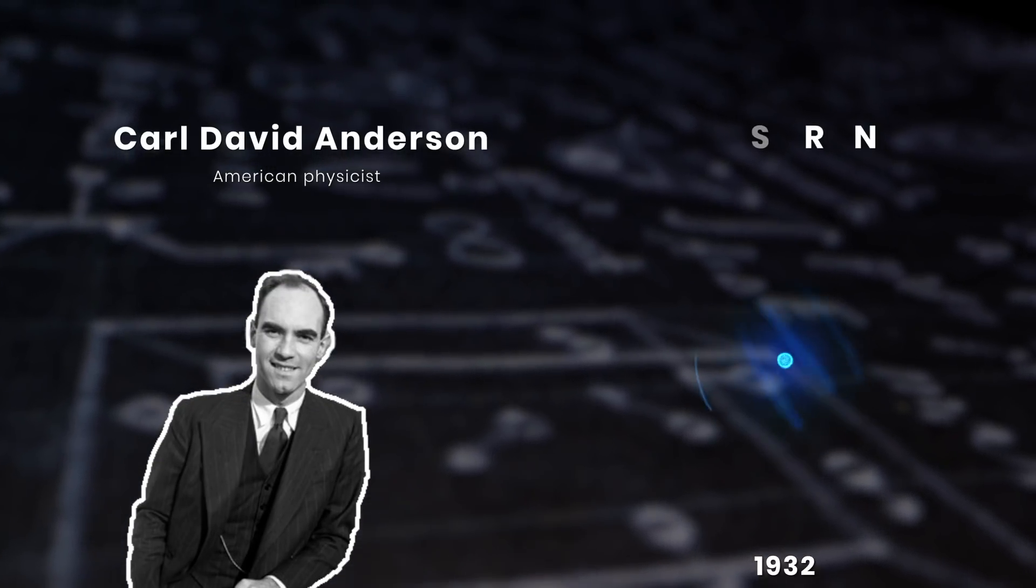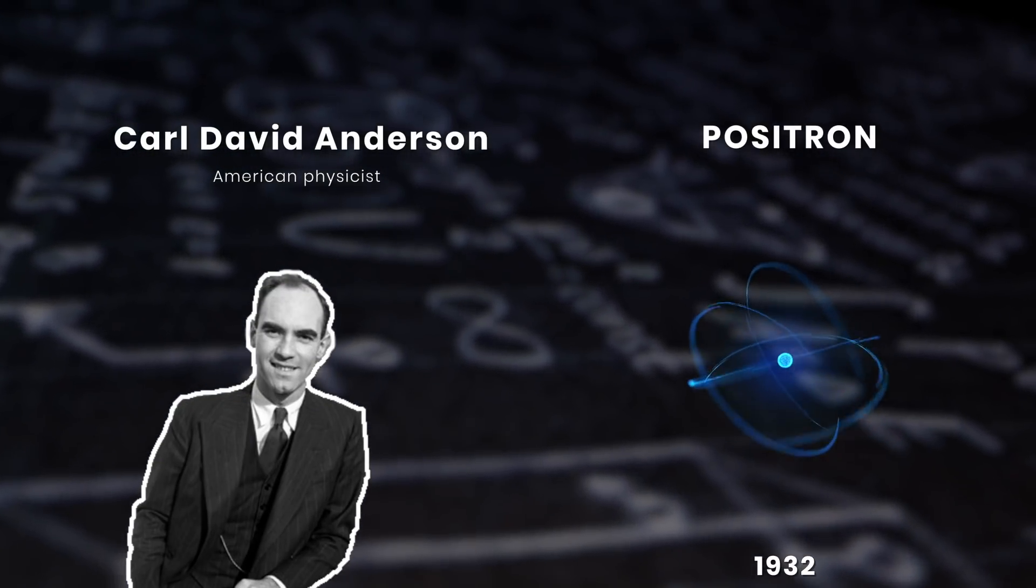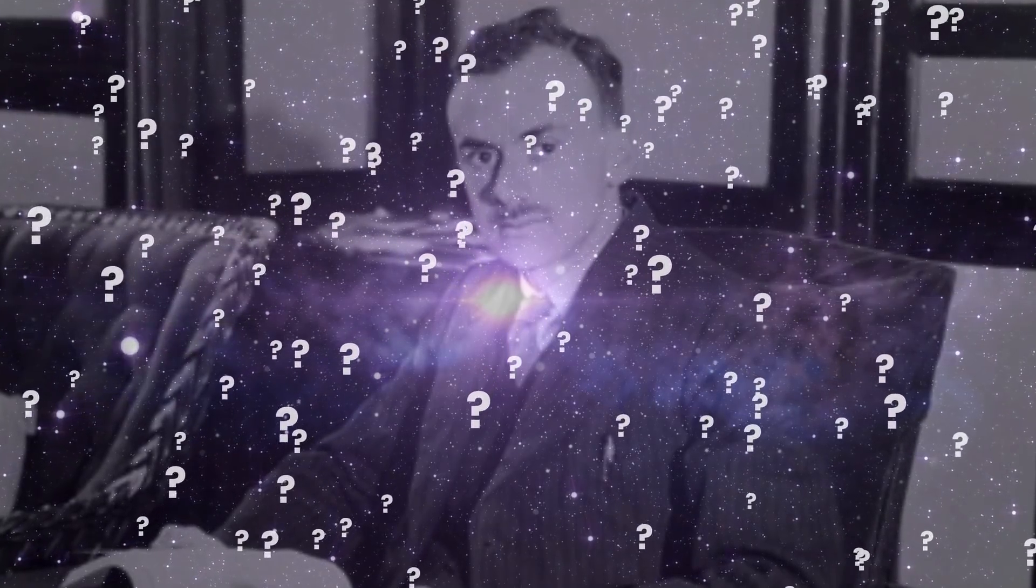But the truth eventually triumphed, and in 1932, K.D. Anderson discovered this anti-electron, which he called the positron, that is, the positive electron. So Dirac was right?